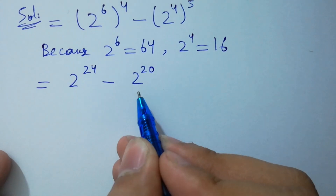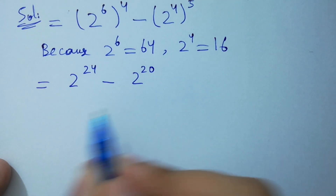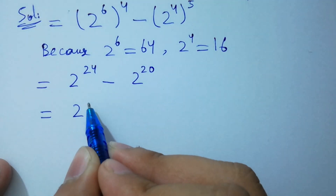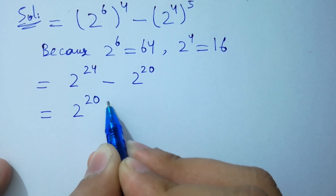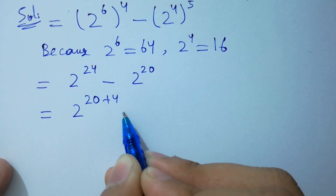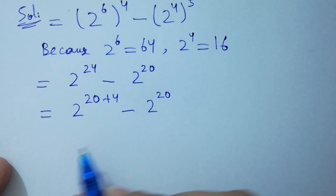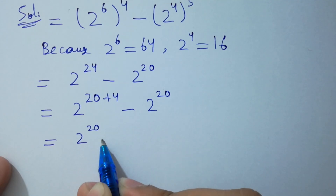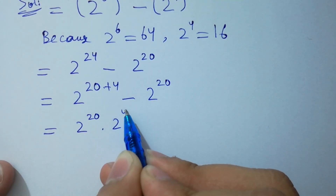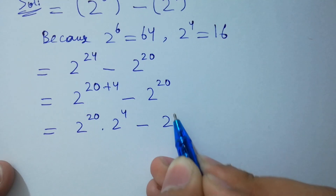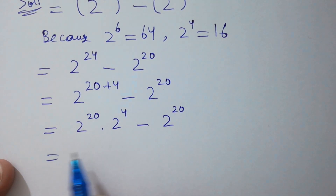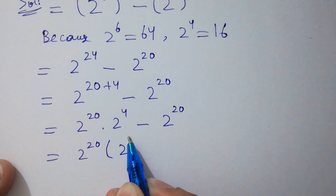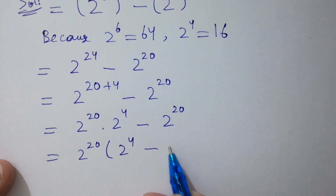In the next step, to factor out 2 to the power 20, it can be written as 2 to the power 20 times 2 to the power 4 minus 2 to the power 20. Taking 2 to the power 20 as common, we have 2 to the power 20 times open bracket 2 to the power 4 minus 1 close bracket.